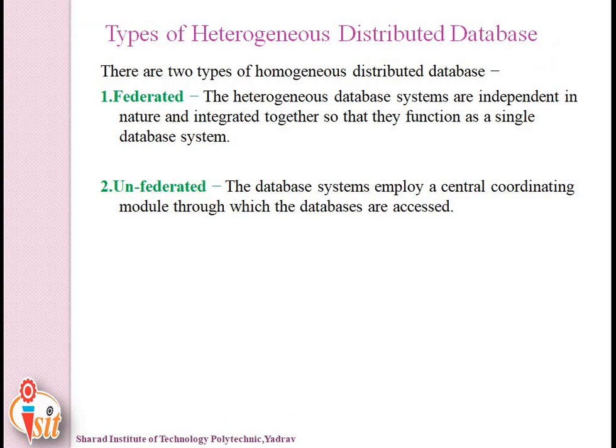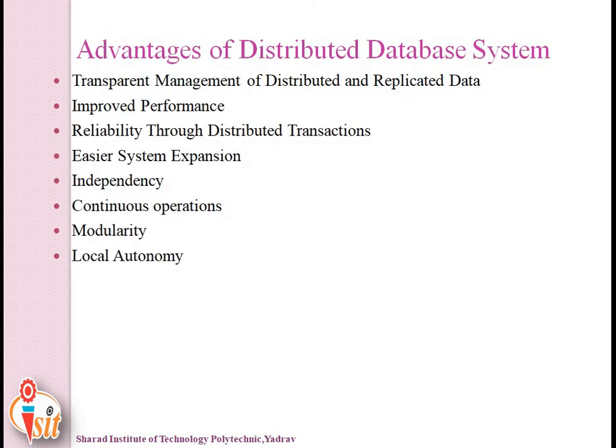In a heterogeneous distributed database system, different sites can use different schemas and software, which can lead to problems in query processing and transactions. An example shows different sites using SQL Server 2009, Oracle 9i, and MS Access connected via a communication channel. There are two types of heterogeneous distributed databases: federated, where heterogeneous database systems are independent in nature but integrated to function as a single database system, and unfederated, where a central coordinating model controls database access.